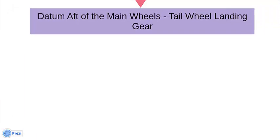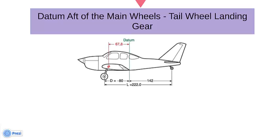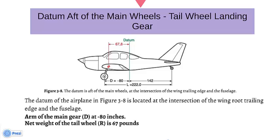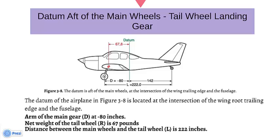Datum aft of the main wheels, tail wheel landing gear. The datum of the airplane in Figure 3-8 is located at the intersection of the wing root trailing edge and the fuselage. This places the arm of the main gear D at negative 80 inches. The net weight of the tail wheel R is 67 pounds, the distance between main wheels and tail wheel L is 222 inches, and the total net weight W is 1,218 pounds.